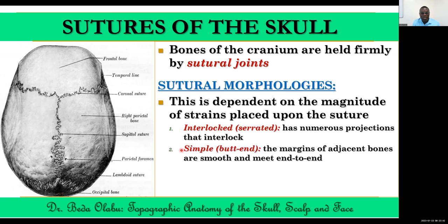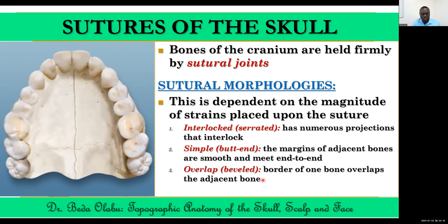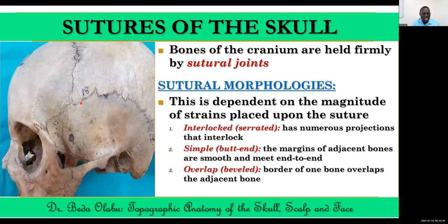Then we can have what is called a simple or butt-end suture, where the margins of adjacent bones are relatively smooth. This is seen in the suture between the right and left palatal shelves of the maxilla, and between the right and left palatine bones — the bones meet end-to-end. Then there is the beveled suture, where adjacent bones overlap. This is mostly seen in the squamosal suture between the parietal bone and the squamous part of the temporal bone.